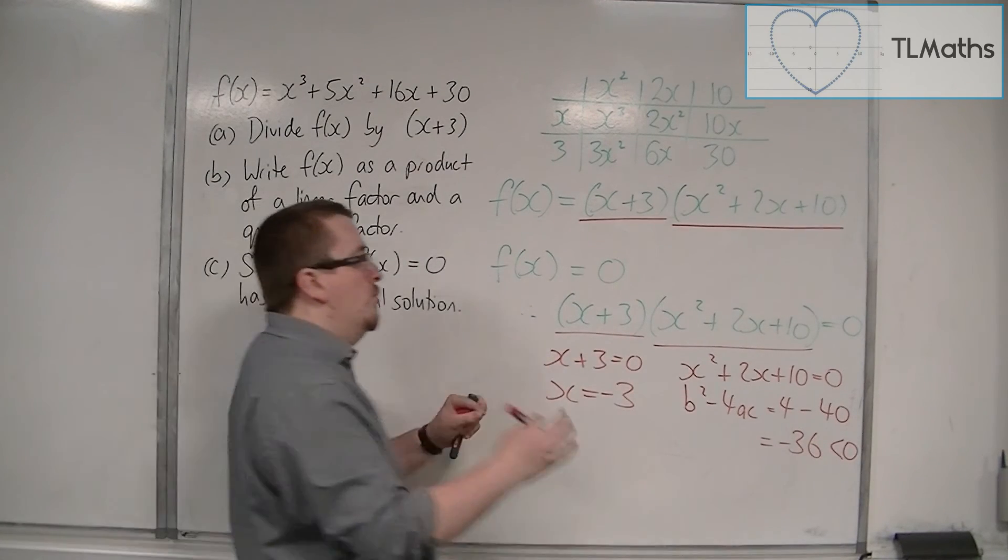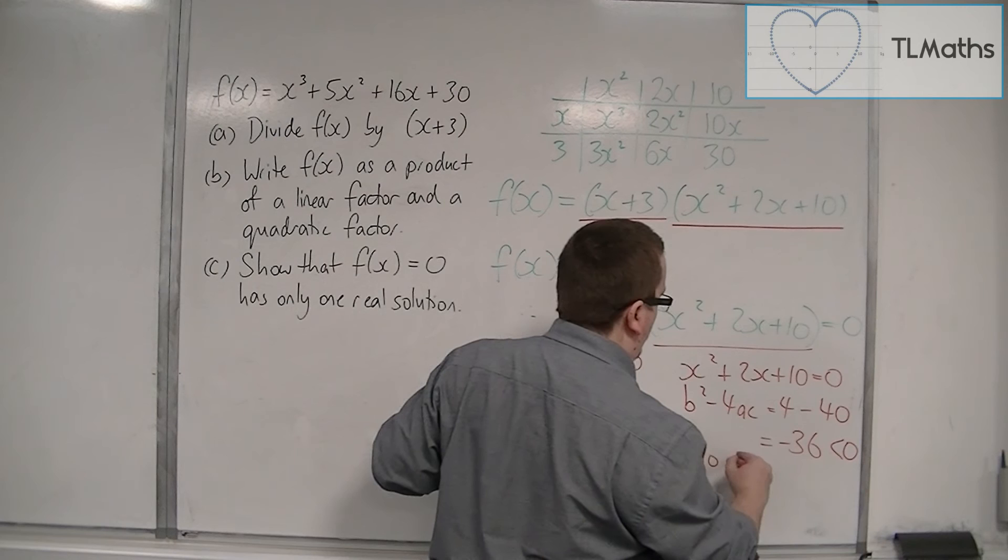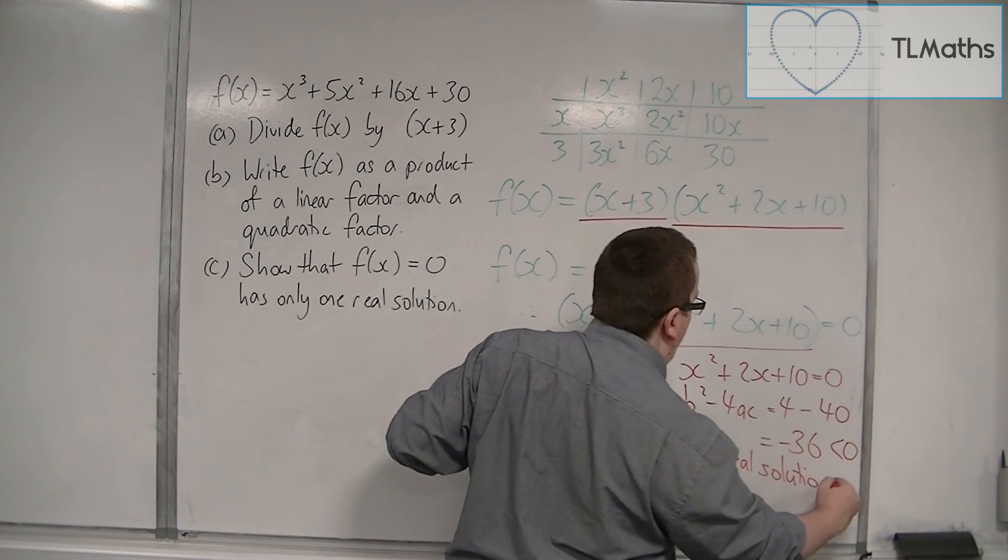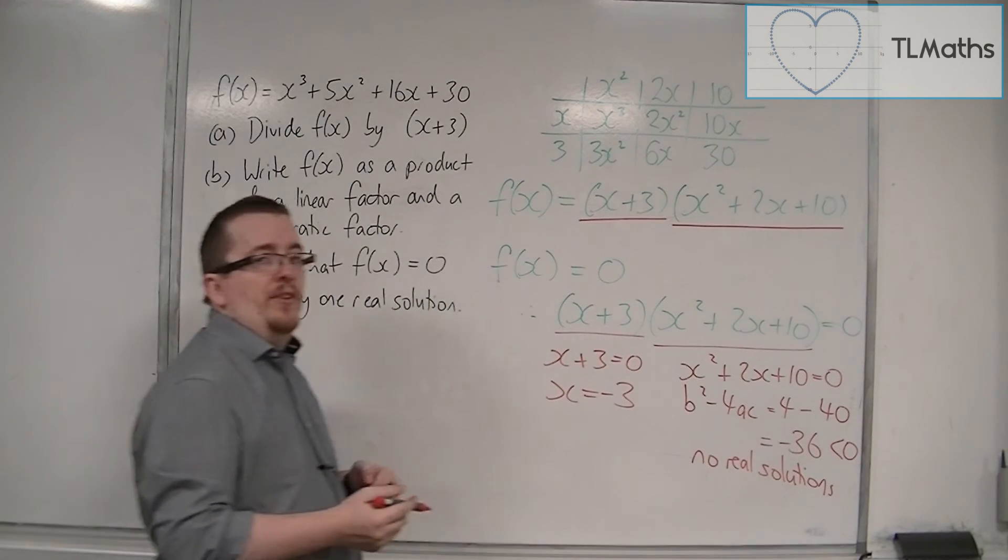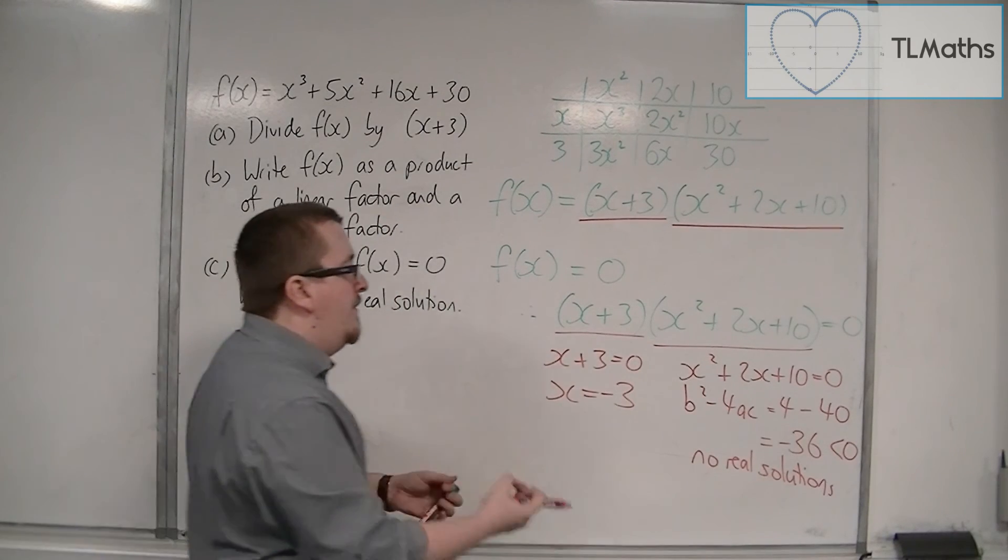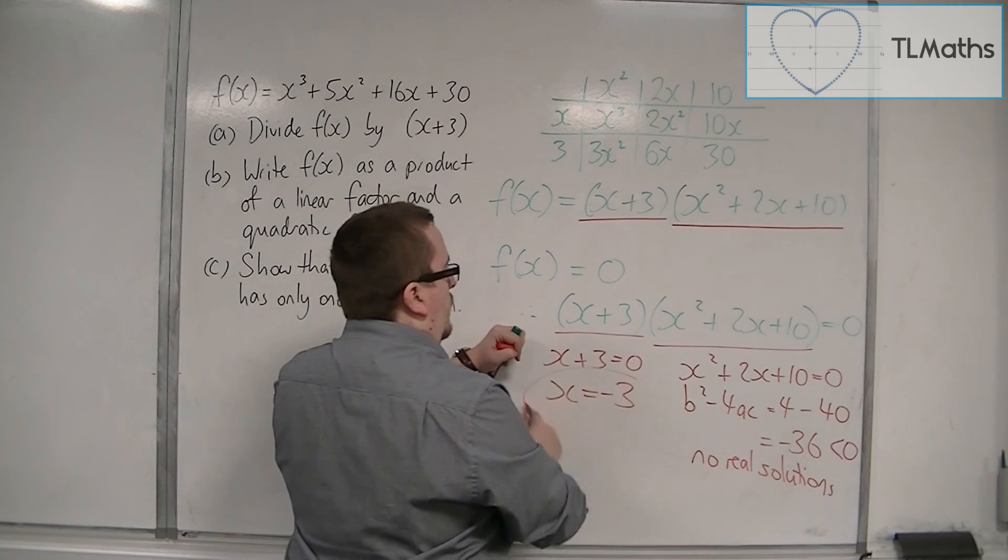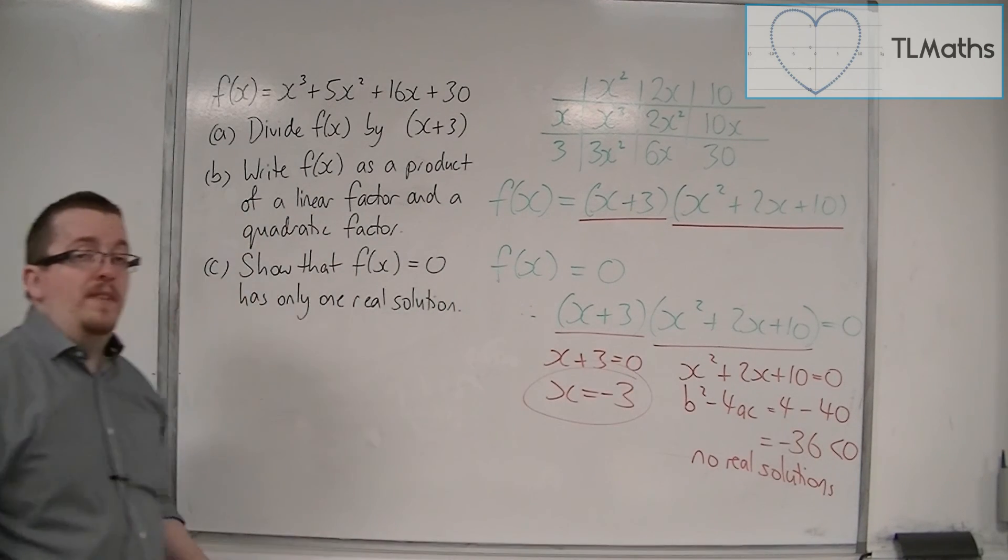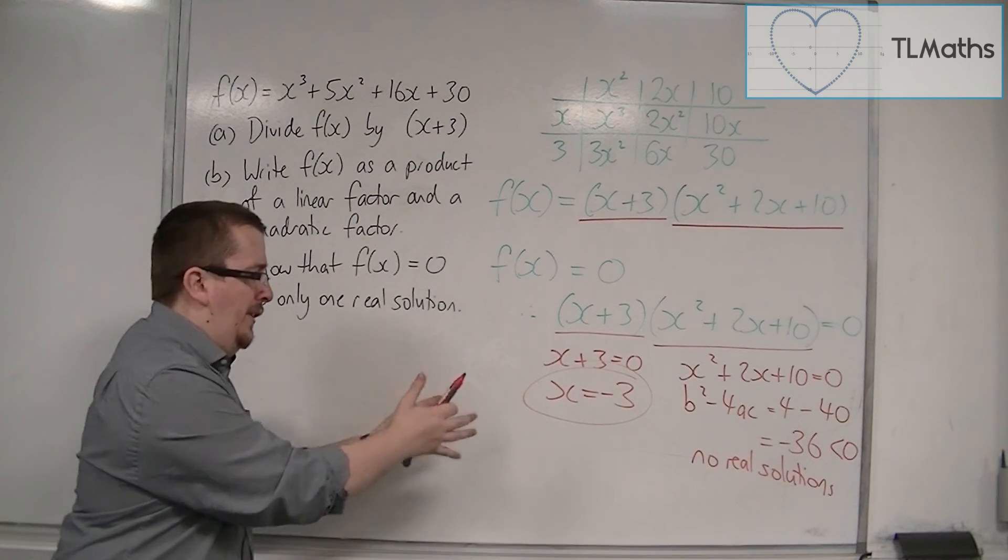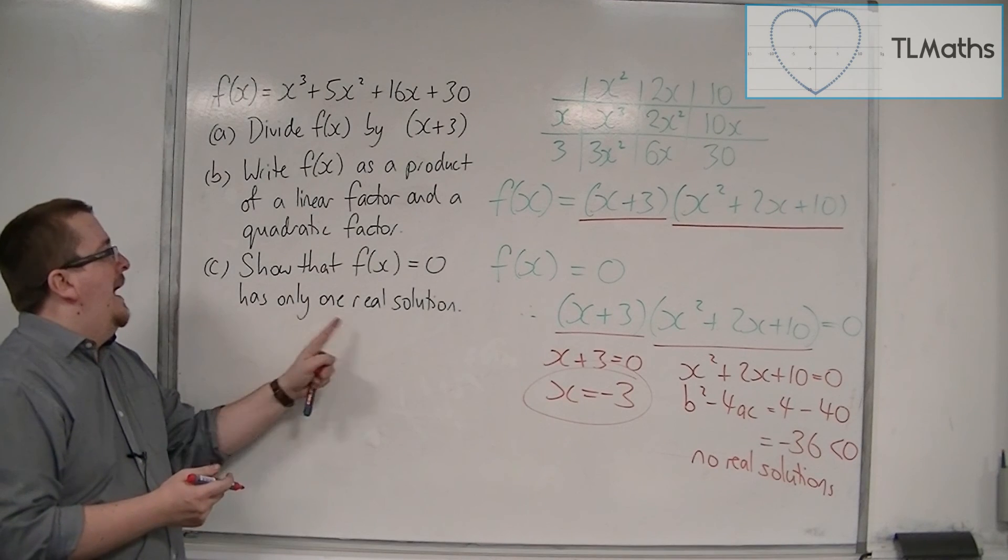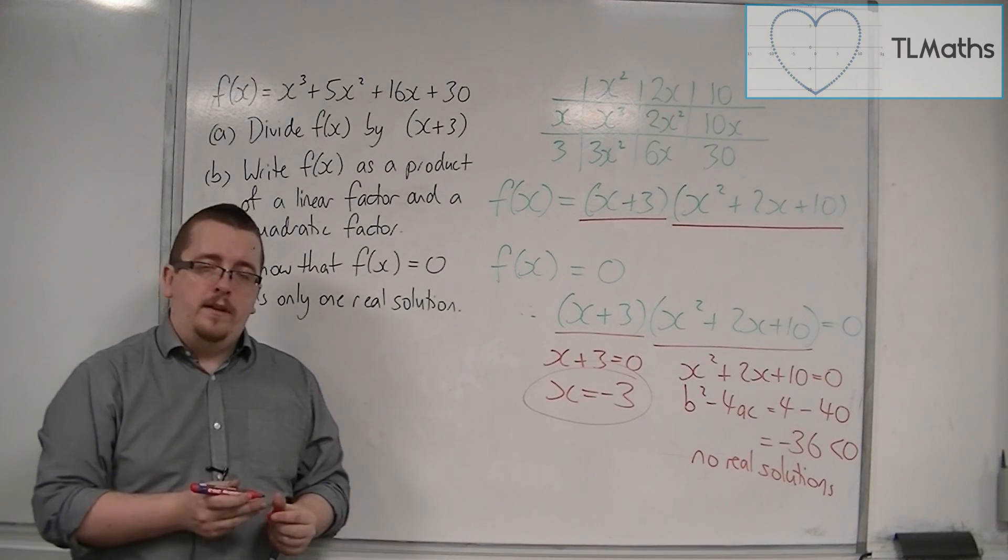there can be no real solutions from the quadratic. So it can never equal 0. The only way I can get any values from this being 0 is from x=-3. That's the only real solution to f(x)=0, as was required.